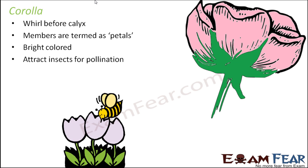The most important function of petals is to attract insects for pollination. Their beautiful colors attract insects, and when insects come to them, they act as pollinating agents and help in the process of pollination. For more detail on pollination, please refer to the videos on reproduction in plants.